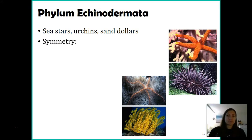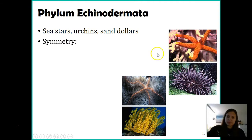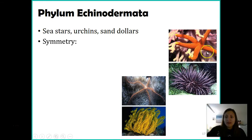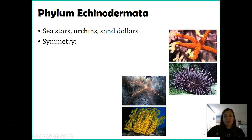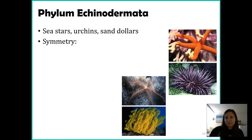Their symmetry is weird. As an adult, they do have radial symmetry. Looking at these two different sea star species and the sea urchin, they are radial. They don't have a front and a back, they don't have a left and a right. They do have a top and a bottom, similar to our other radial organisms, but that's it.